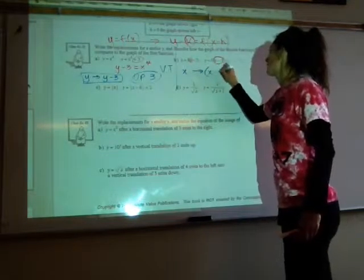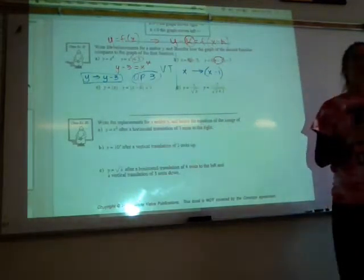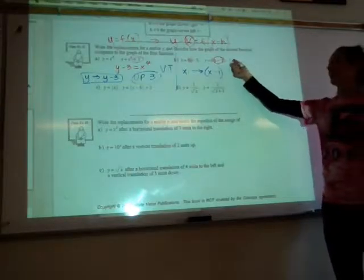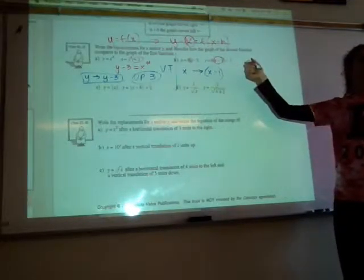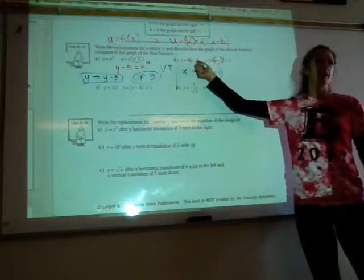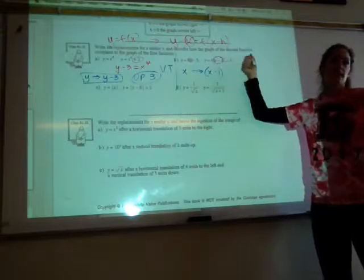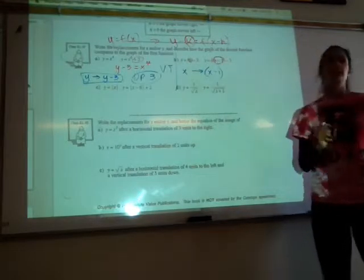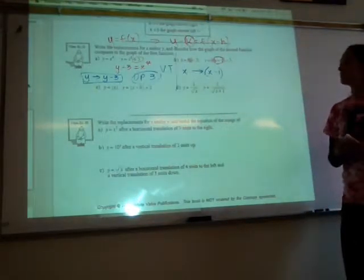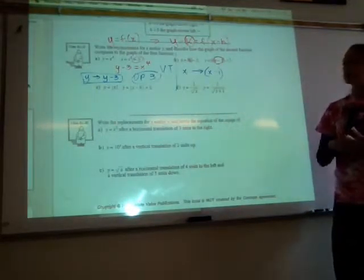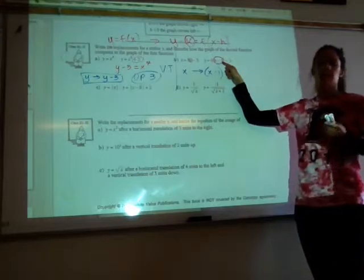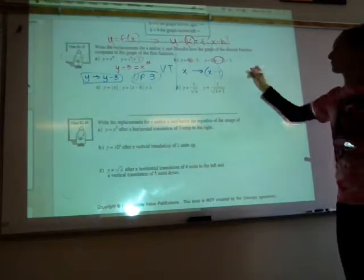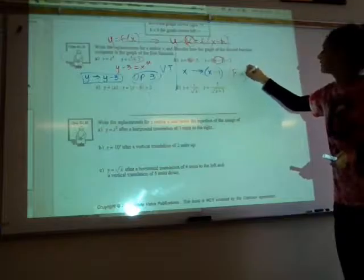Okay, you might have thought that at first that there was a vertical translation, but there is a minus 3 in the first equation, and it's still there in the second. So nothing changed there. It was only the x changed to x minus 1. And our h value is actually a positive 1, so we're going to move right 1 unit.